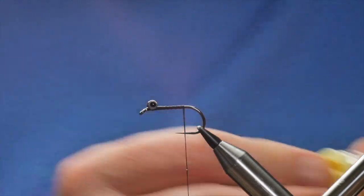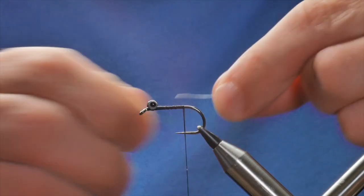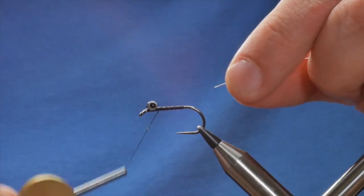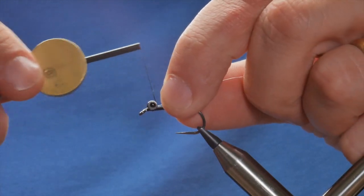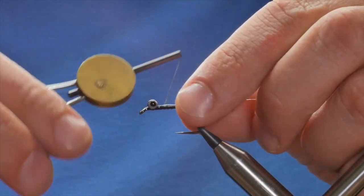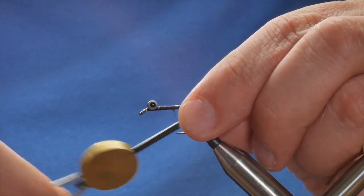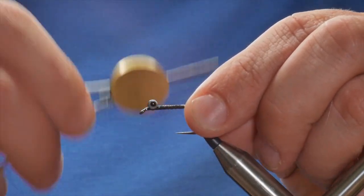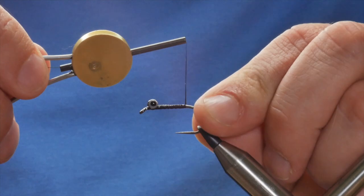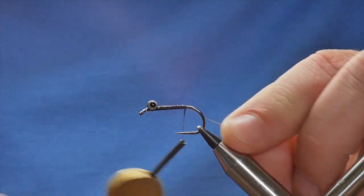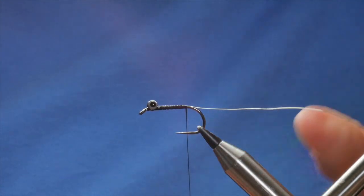I can come in with some silver wire for ribbing. I'm going to bring my thread all the way to the top, catch it in just behind the dumbbell eyes, and bring my thread to the butt end of my fly. Next, the body material.